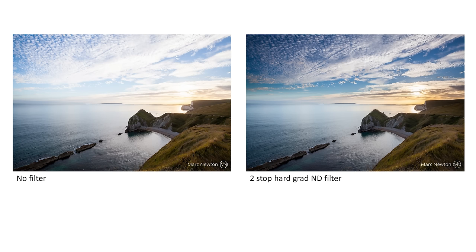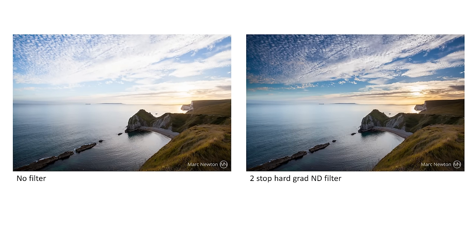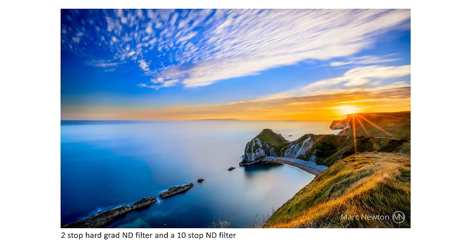Let's look at an example of using a hard grad ND filter. The one on the left is a normal picture shot using what the camera thought was the correct exposure. It's looked at the sky and the ground and given you an in-between, but what you can see is it's blown out the sky — the ground looks okay but the sky certainly isn't, because the sky on this particular day was really bright. The one on the right has a two-stop hard grad ND filter on, and this has darkened the sky by two stops to give a much more balanced exposure. Then when you use a 10-stop ND filter together with the ND grad and add some Lightroom and Photoshop processing, you can get a shot like this.